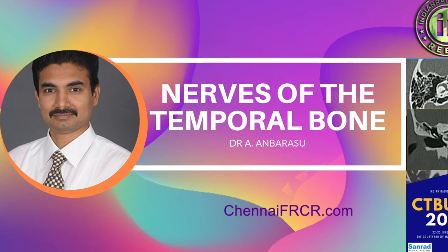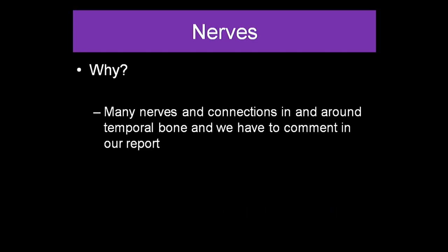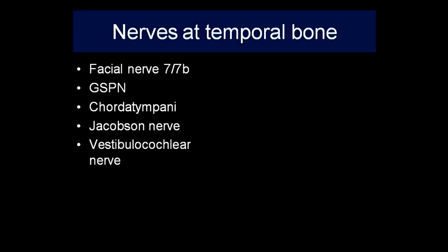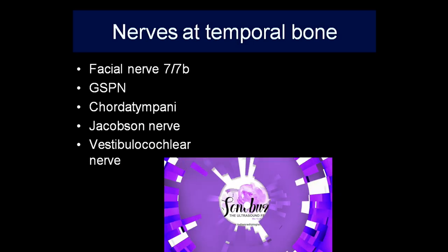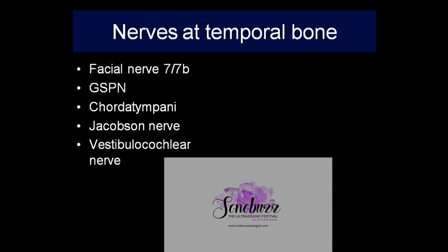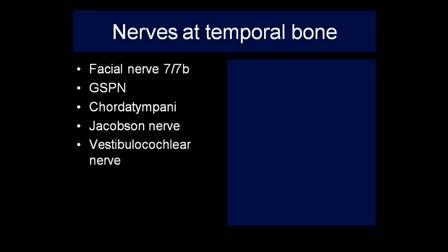There are many nerves and connections in and around the temporal bone that we need to comment on. We look at the facial nerve, greater superficial petrosal nerve, chorda tympani, Jacobson's nerve, and the vestibulocochlear nerve. The vestibulocochlear nerve will be better covered when discussing the internal ear. The seventh cranial nerve is an important nerve.